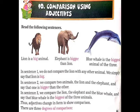Read the following sentences. First sentence is: Lion is a big animal. Second sentence is: Elephant is bigger than lion. Third sentence is: Blue whale is the biggest animal of the three.